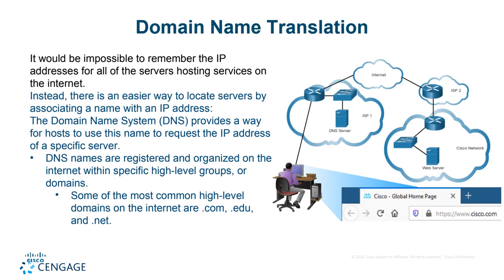One of the important services is domain name translation. Because you cannot remember — if you want to visit Microsoft.com, do you know their IP address? The computer only understands numbers. When you type Microsoft.com, the DNS will translate Microsoft.com to the IP address of Microsoft.